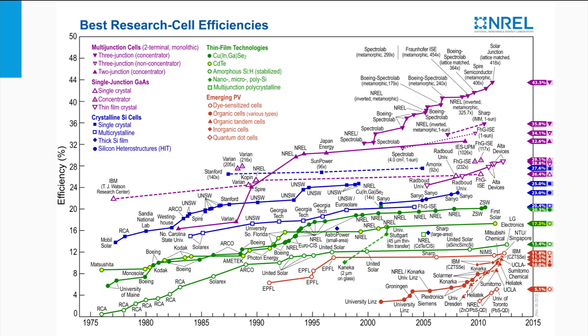The blue lines and dots represent crystalline silicon technology based on monocrystalline and multicrystalline silicon. The record efficiency ranges from 20% up to 25% under standard 1 sun illumination conditions, and 27% can be achieved under 92 suns illumination.